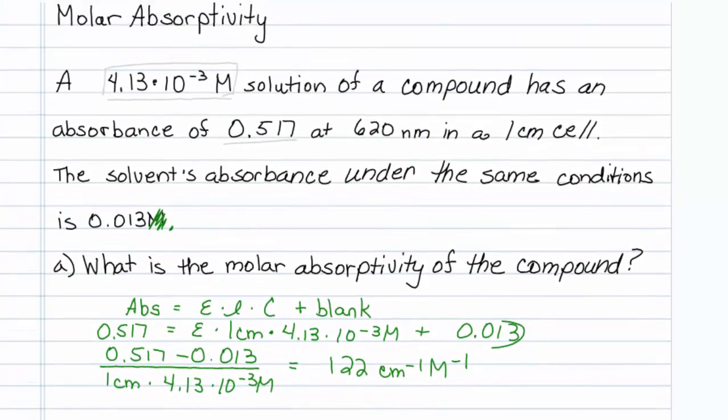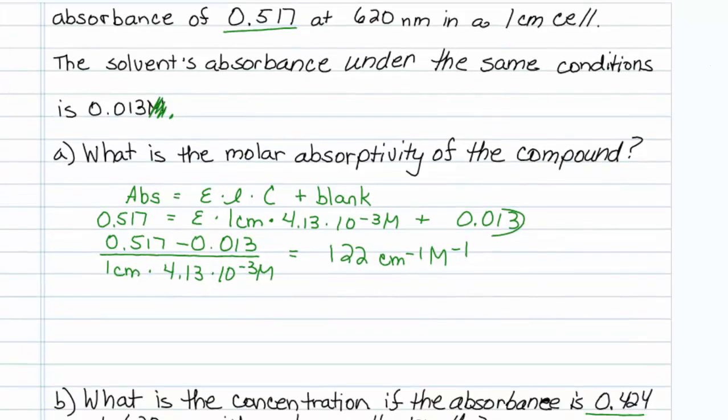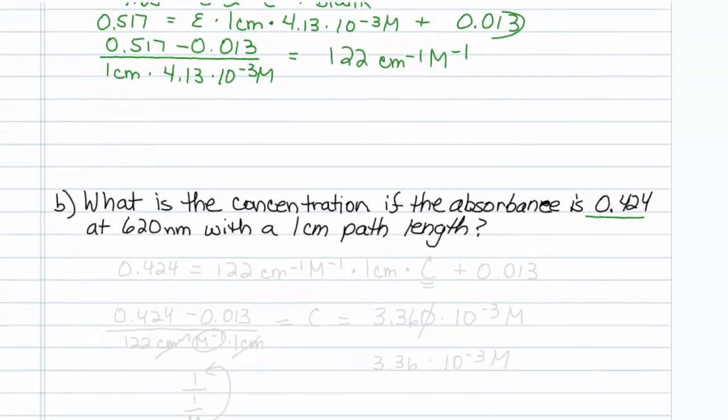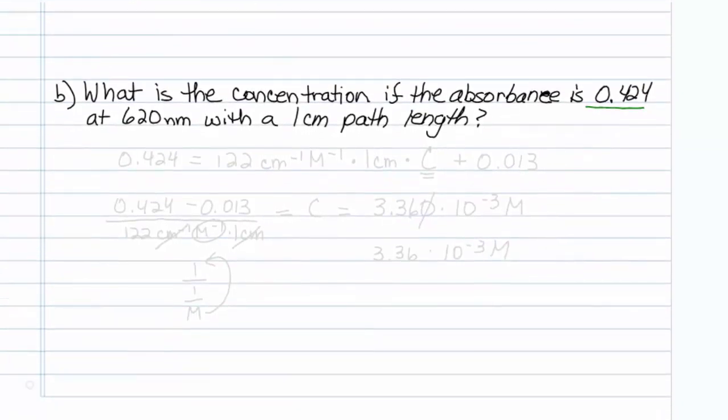Now notice something. This has to be proportional and linear. So if 0.517 has 4.13 times 10 to the minus 3 molar, then 0.424 ought to be roughly about four fifths of this concentration value. But we can just use the equation again.